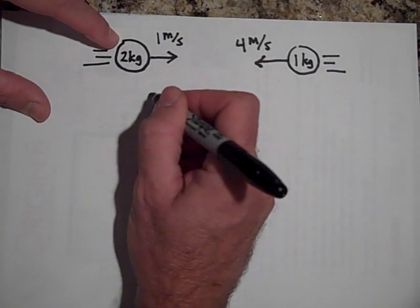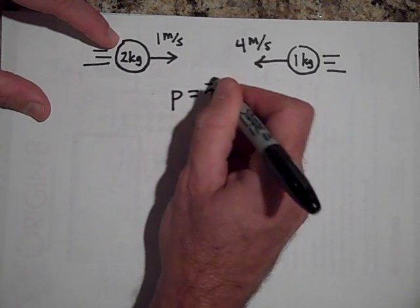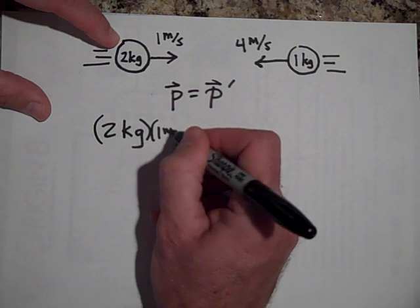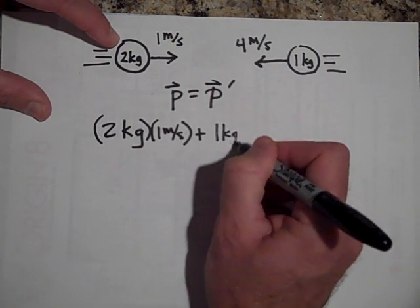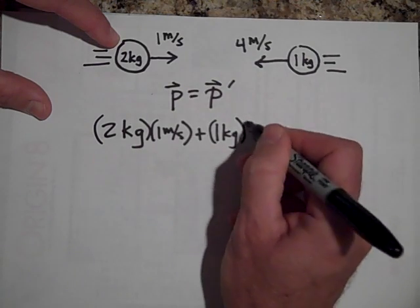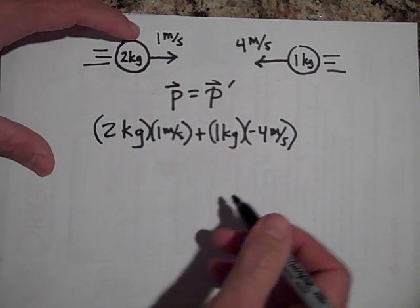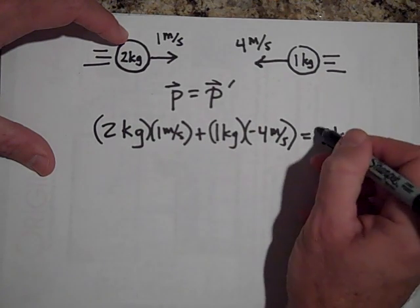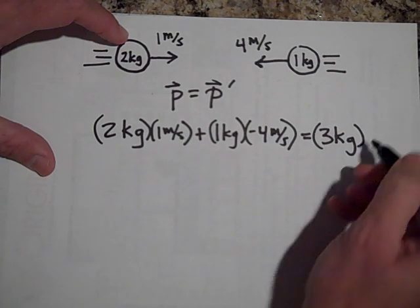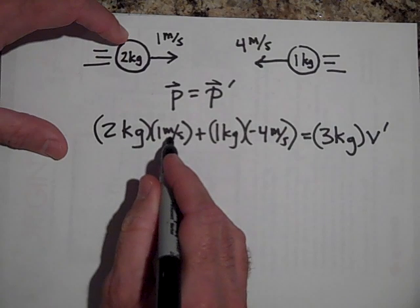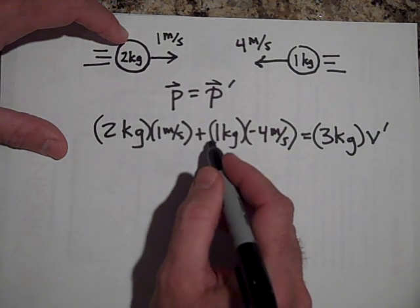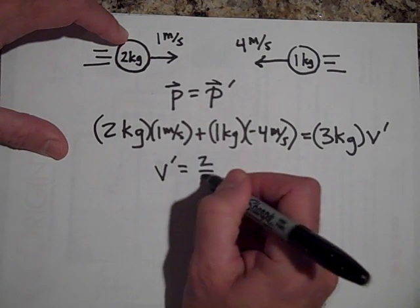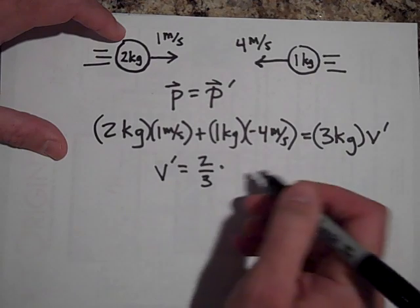You do P equals P prime: two kilograms times one meter per second plus one kilogram times negative four meters per second. Negatives are huge in this chapter. When they stick together you call this one big glob of three kilograms. That gives you two plus negative four equals negative two, so V prime would be negative two thirds meters per second.